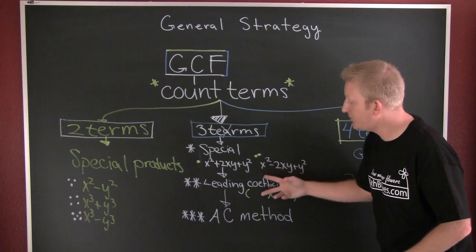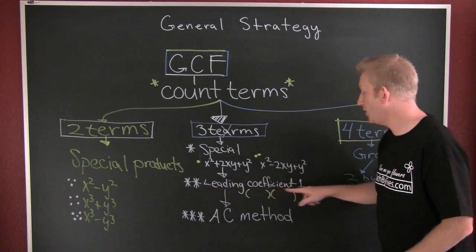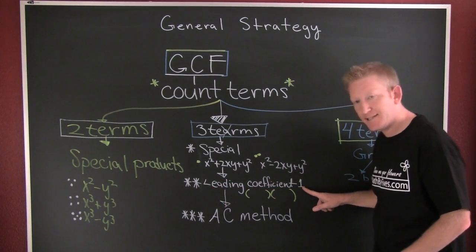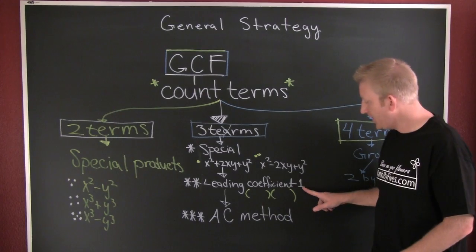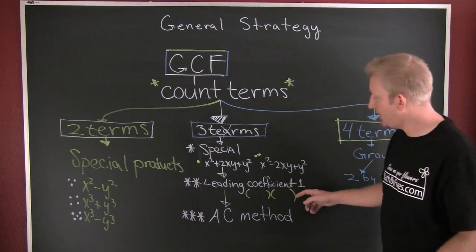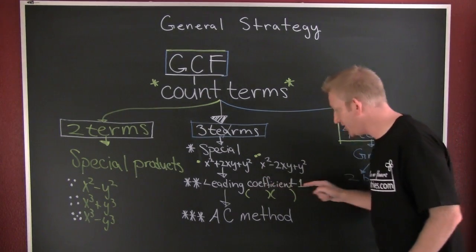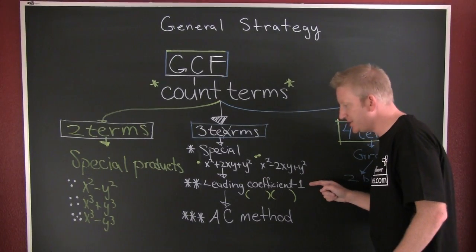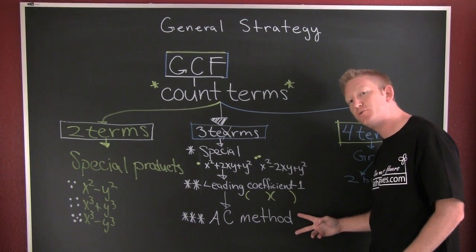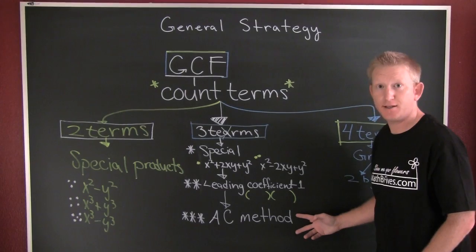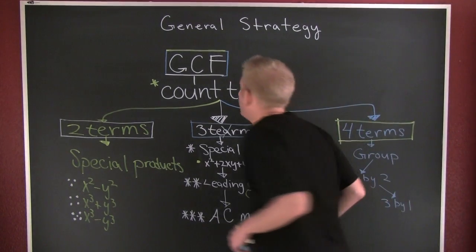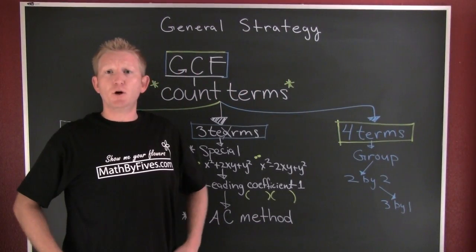If it's not a perfect square trinomial, move on. Check the leading coefficient — if it's one, you can factor directly. If the leading coefficient is not one, you're going to employ the AC method.